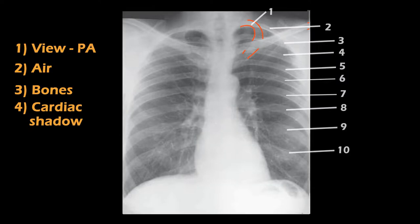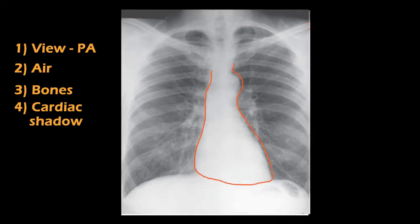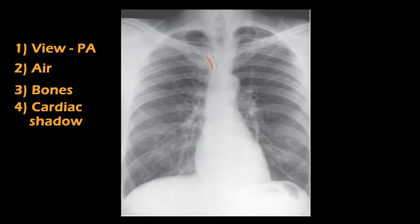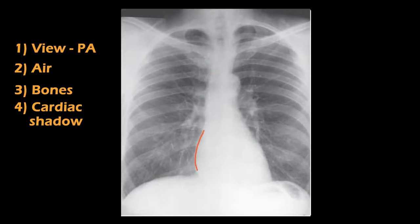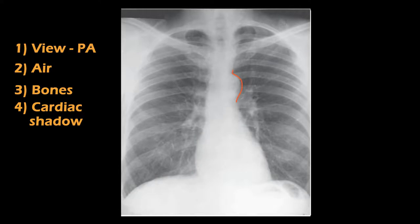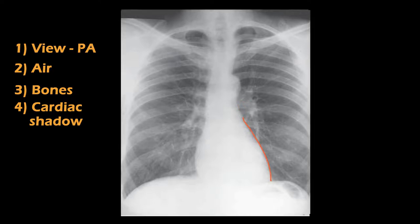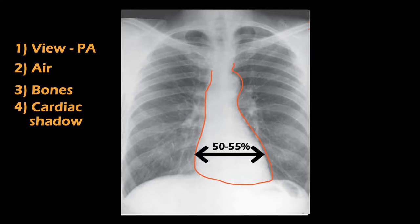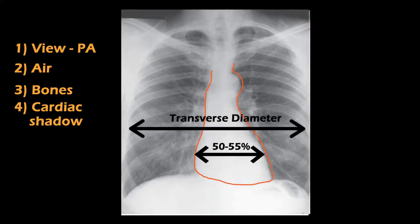C stands for cardiac shadow. This large white shadow that lies in the mediastinum is the heart. The right border from above downwards includes the right brachiocephalic vein seen as a faint shadow, the shadow of the superior vena cava, the right atrium, and the inferior vena cava. The left border from above downwards includes the aortic knuckle due to the arch of the aorta, the shadow of the pulmonary trunk — more specifically the left pulmonary artery — and the left ventricle. Normally, the cardiac shadow is about 50 to 55 percent of the transverse diameter of the thorax; in cardiomegaly, this percentage is increased.